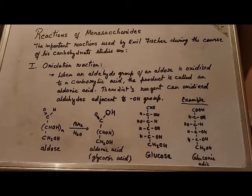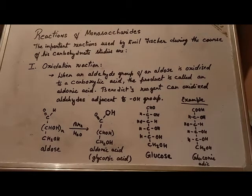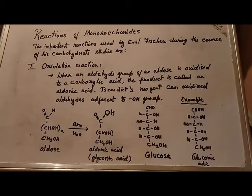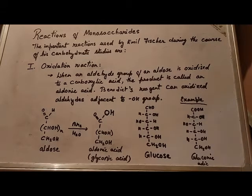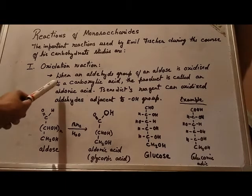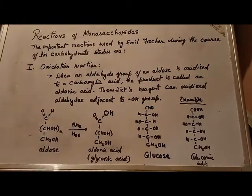Sugars are classified as reducing or non-reducing based on their reactivity with Tollens', Benedict's, or Fehling's reagent. If a sugar is oxidized by these reagents then it is referred to as a reducing sugar. Most monosaccharide molecules are referred to as reducing sugars because the oxidant gets reduced in the reaction by these monosaccharides. When an aldehyde group of an aldose is oxidized to a carboxylic acid, the product is called the aldonic acid.